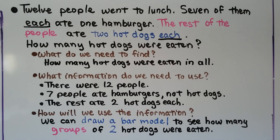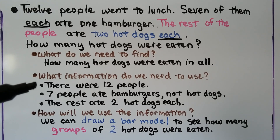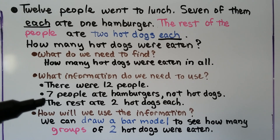Twelve people went to lunch. Seven of them each ate one hamburger. The rest of the people ate two hot dogs each. How many hot dogs were eaten? First, we ask what do we need to find — how many hot dogs were eaten in all. What information do we need? There were twelve people, seven ate hamburgers, and the rest ate two hot dogs each. We can draw a bar model to see how many groups of two hot dogs were eaten.